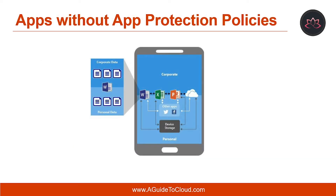Now let's understand apps without App Protection Policies. When apps are used without restrictions, company and personal data can be intermingled. Company data could end up in locations like personal storage or be transferred to apps outside of your purview, resulting in data loss. The example diagram shows unrestricted data movement between corporate and personal apps and to storage locations.